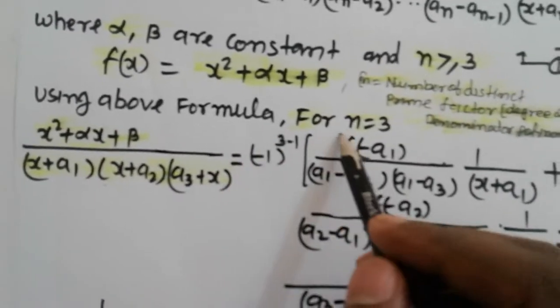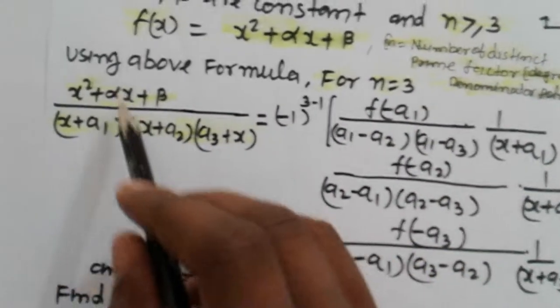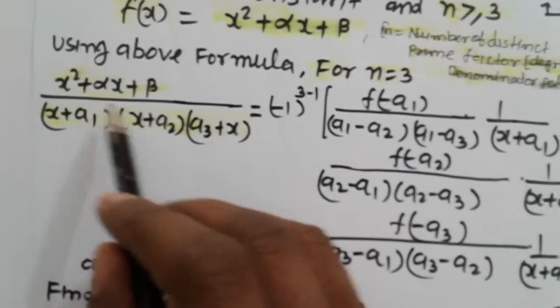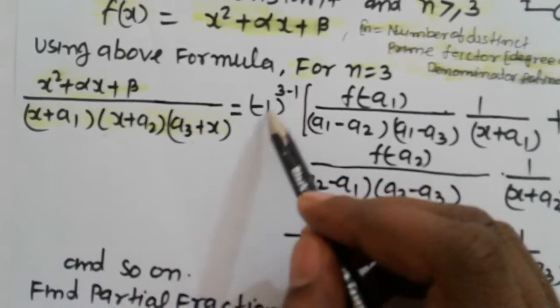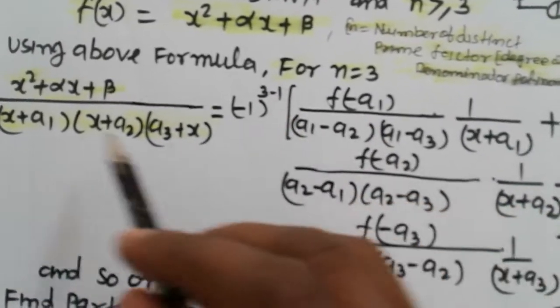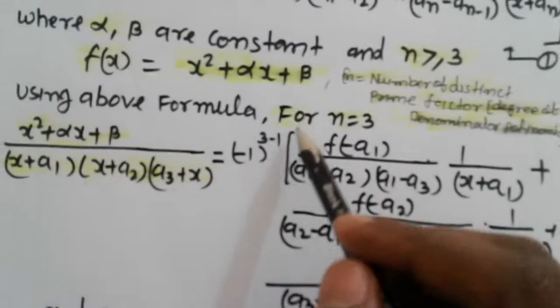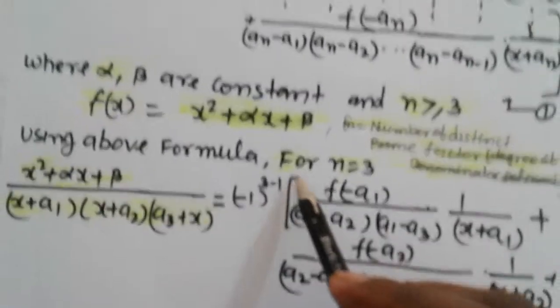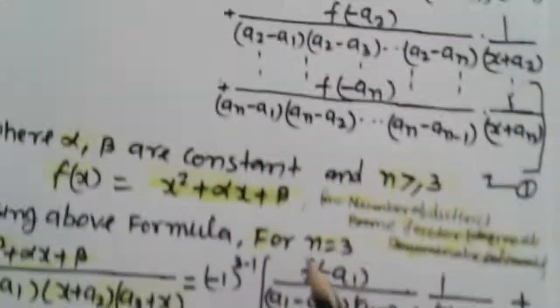Using our formula for n equal to 3, we write down the left hand side, and the right hand side has the sign term minus 1 raised to 3 minus 1, where n is 3 with 3 distinct prime factors, so the exponent is n minus 1 equals 2.